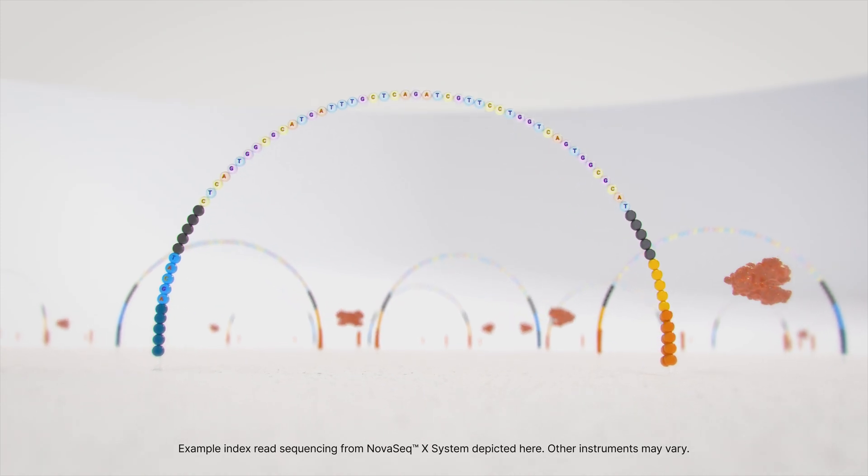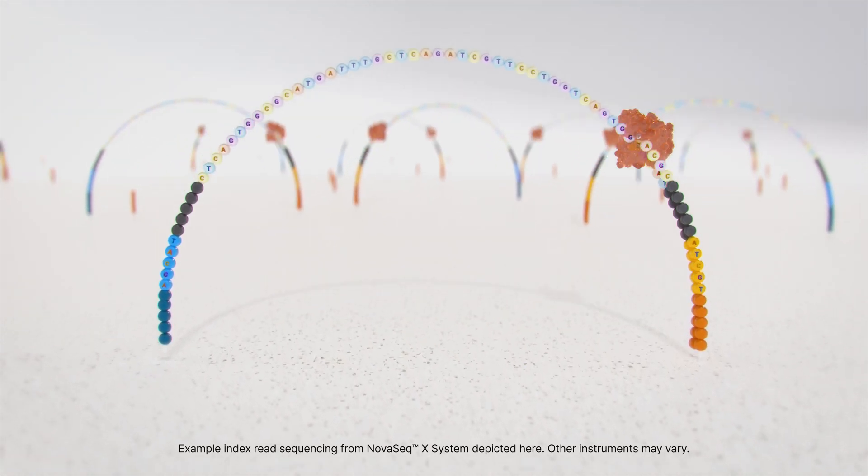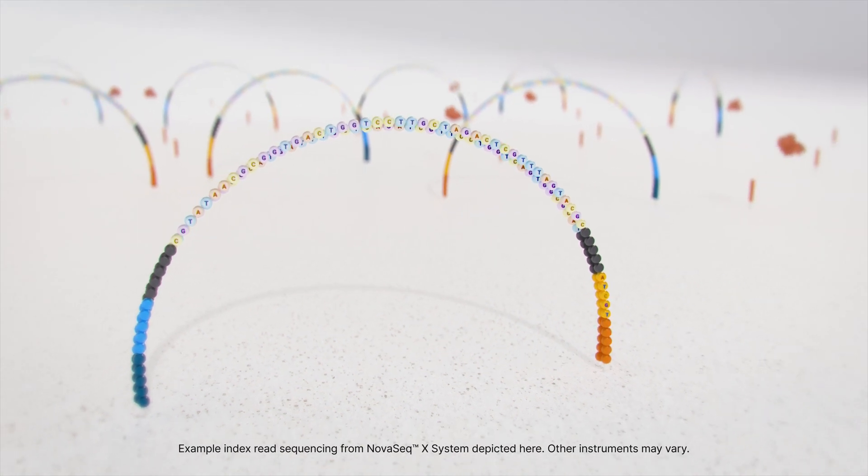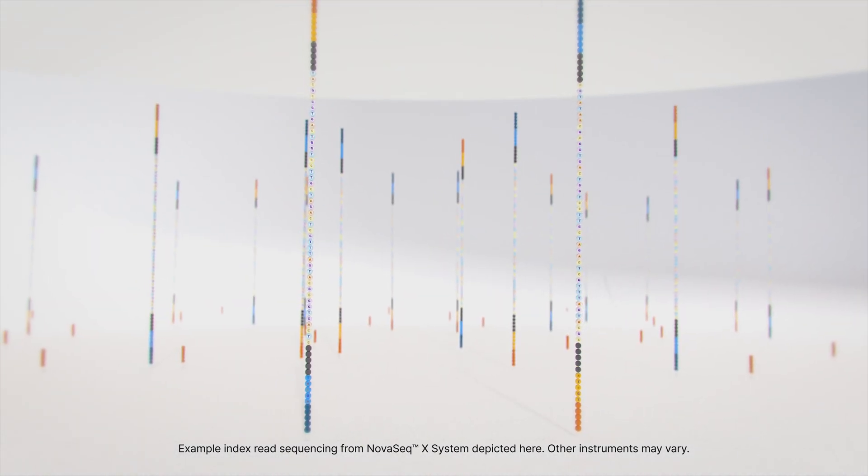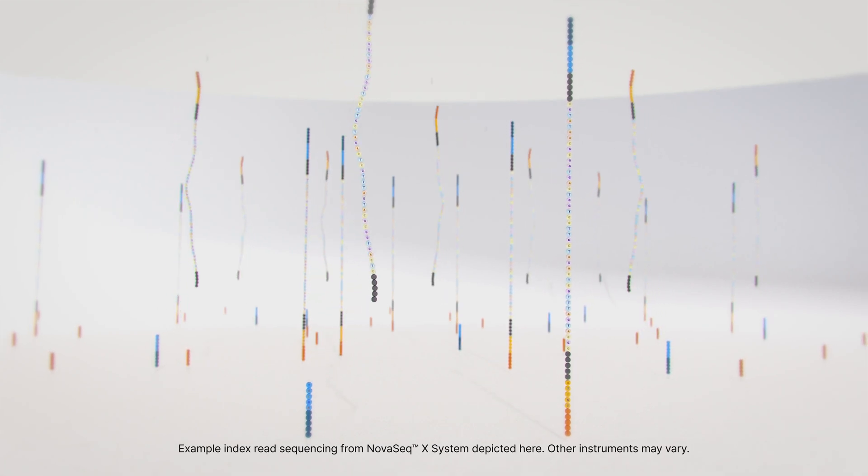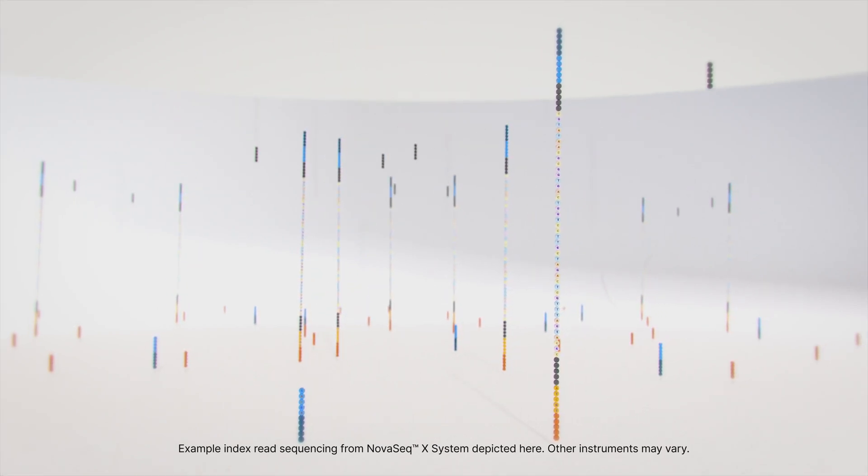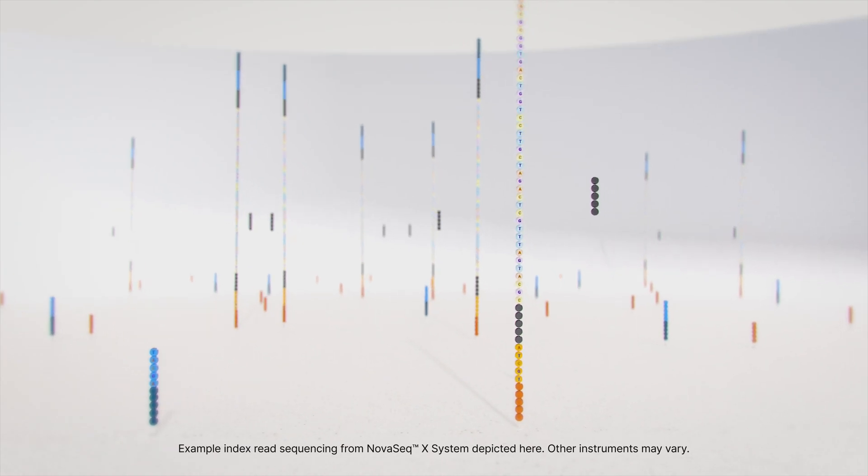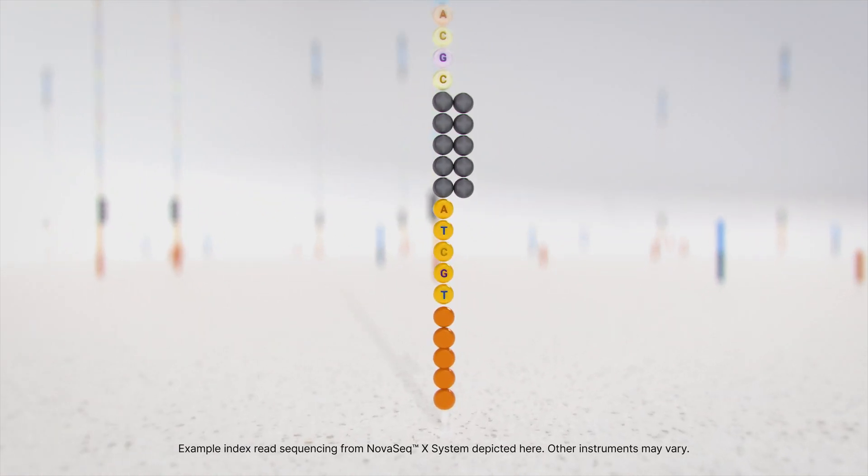Polymerases extend from the second reverse strand oligo, forming a double-stranded bridge. This double-stranded DNA is then linearized and the original forward strand is removed, leaving only the reverse strand. Index 2 is read in the same manner as index 1 with the introduction of an index 2 sequencing primer.